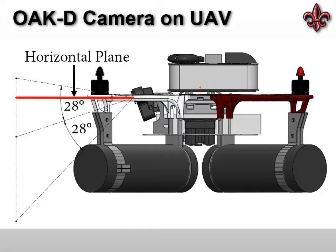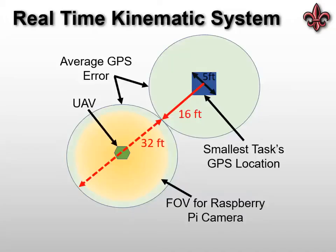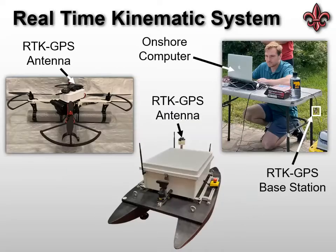The team determined that a real-time kinematic global positioning system would be necessary to assist the UAV in localization. Due to traditional GPS systems having a radial error of up to 16 feet, greater accuracy would be needed for the UAV to locate certain tasks throughout the course when using GPS coordinates provided by RoboNation. A real-time kinematic system accomplishes this by offering up to centimeter-level accuracy. Our system is designed with an RTK GPS base station connected to our onshore computer and two other stations set up on our UAV and ASV. The accuracy of a real-time kinematic system increases with the number of stations.